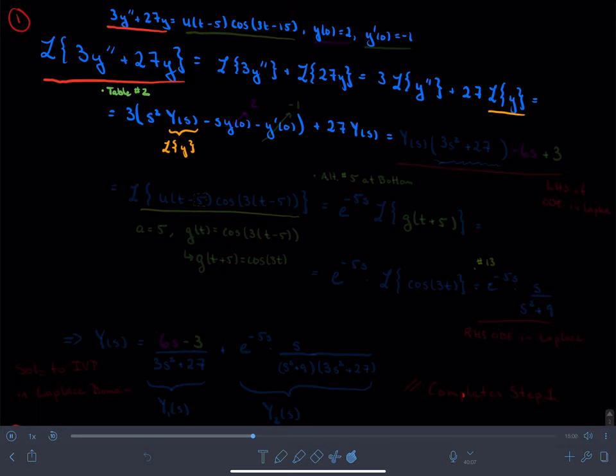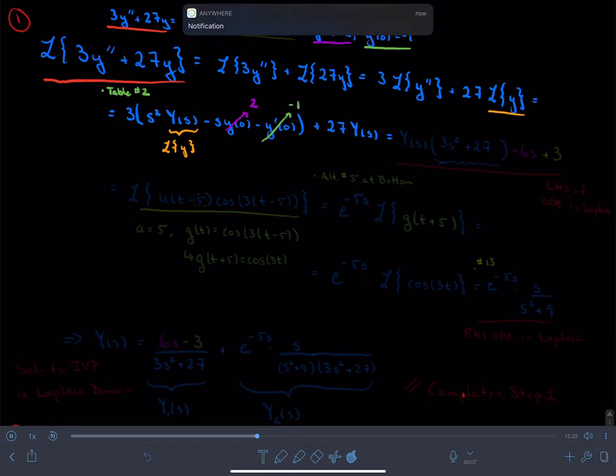What things do we know? We know that y(0) is equal to 2, so that means this y(0) here is equal to 2. We also know that y prime of 0 is equal to, sorry, negative 1. So this y prime of 0 is equal to negative 1.